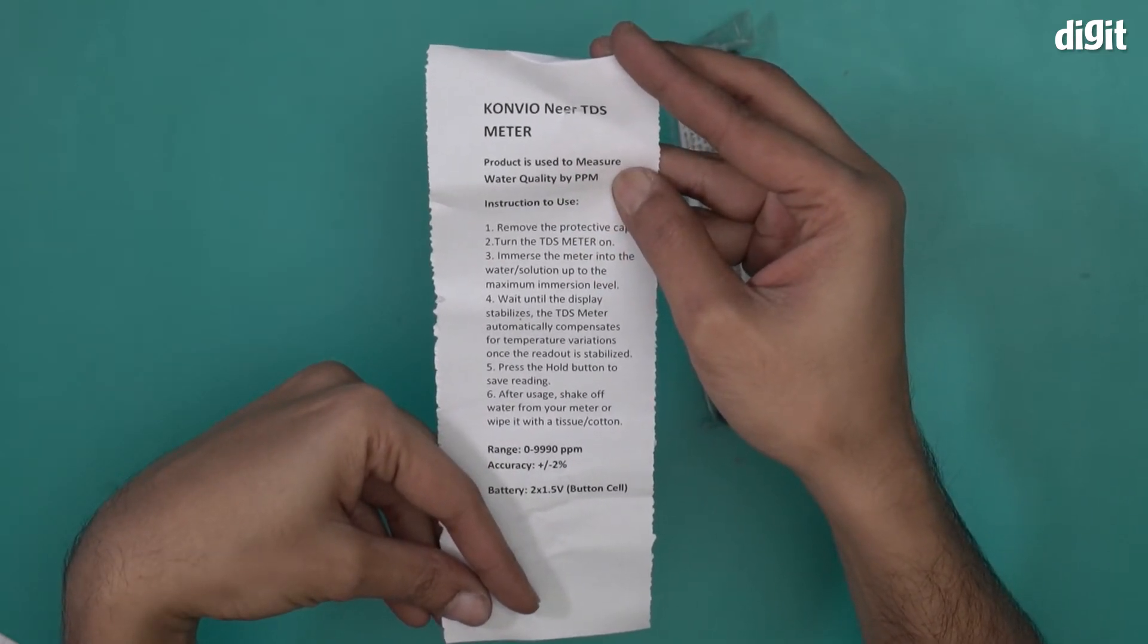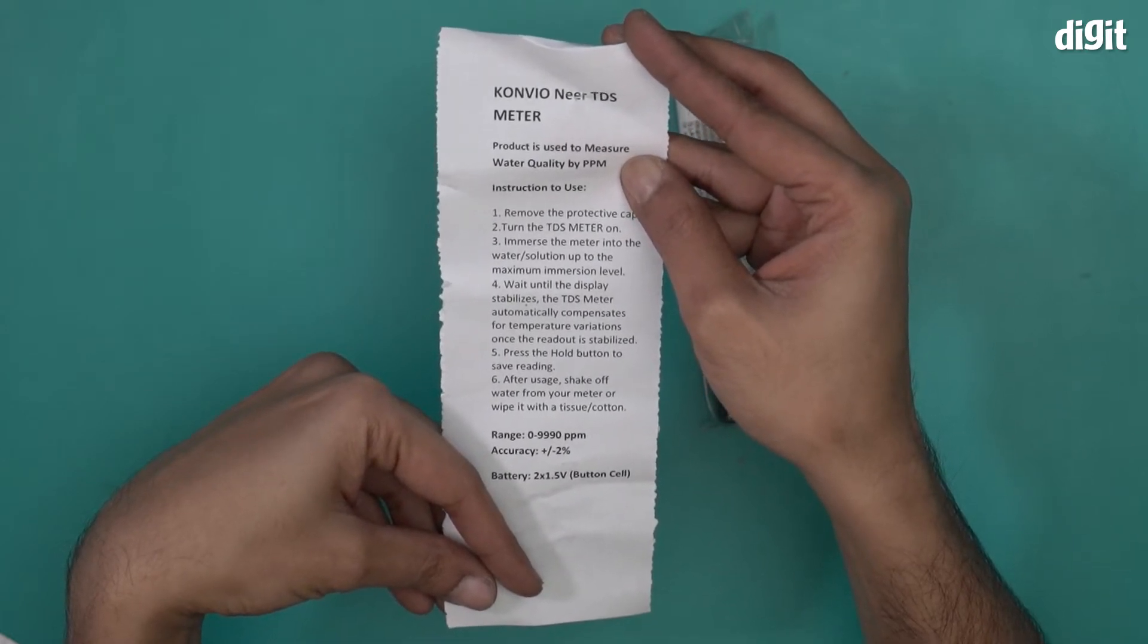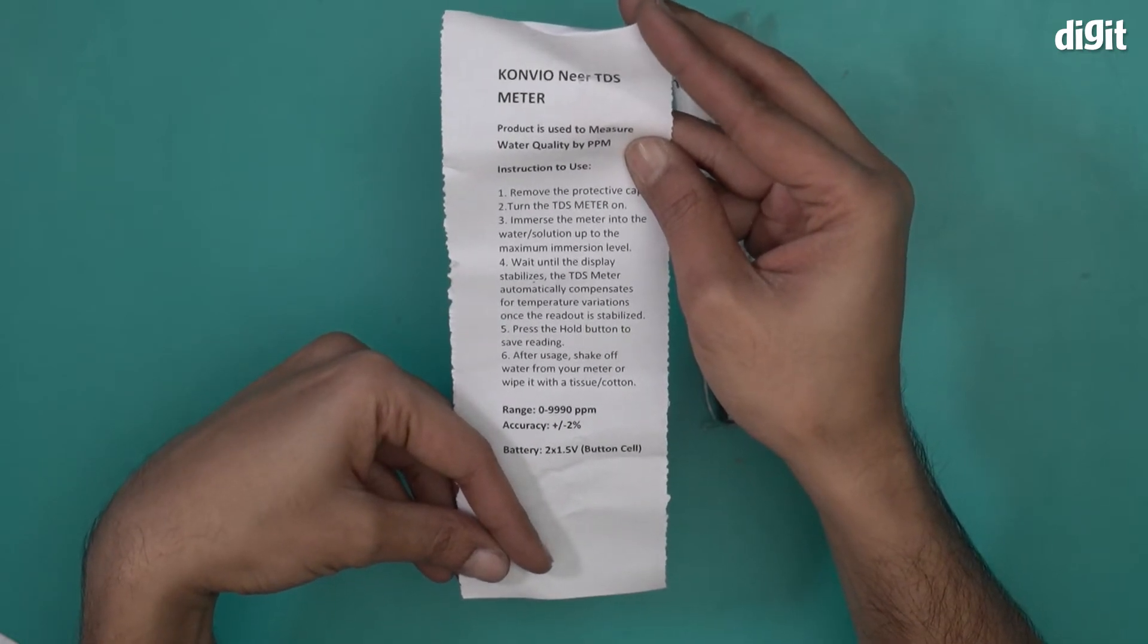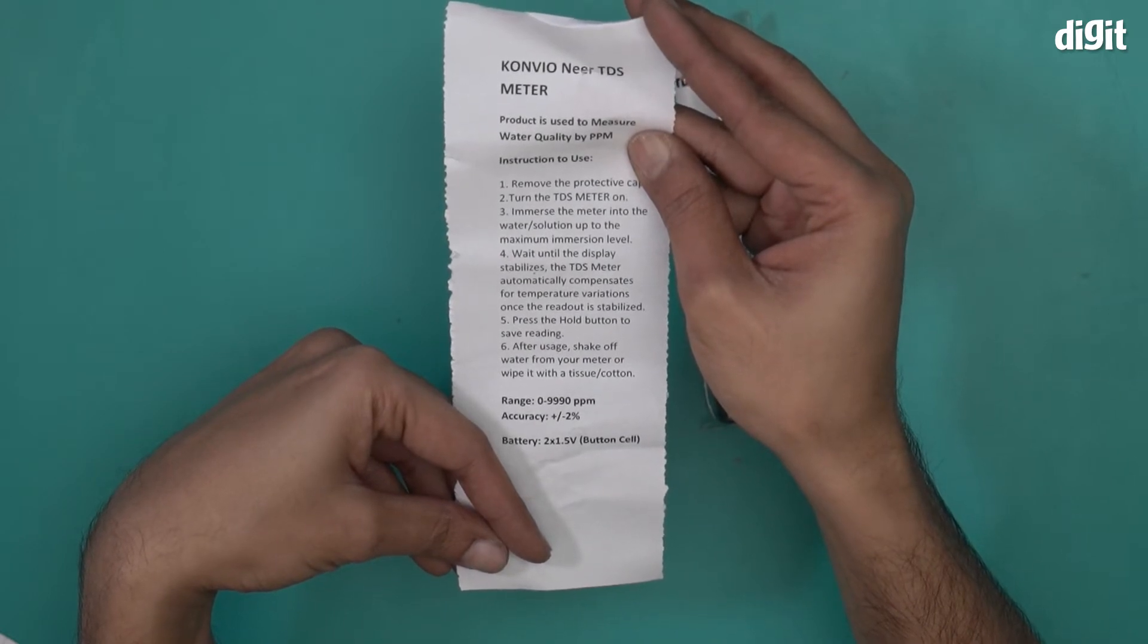Remove the protective cap, turn the TDS meter on. Immerse the meter into the water solution up to the maximum immersion level. Wait until the display stabilizes. The TDS meter automatically compensates for temperature variations once the readout is stabilized. Press the hold button to save readings.